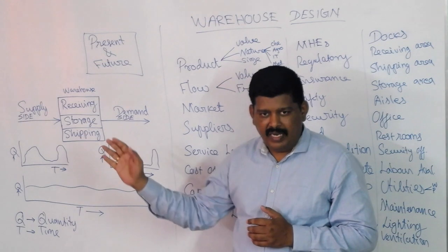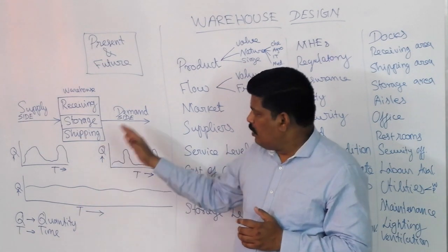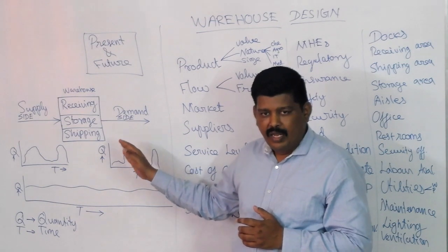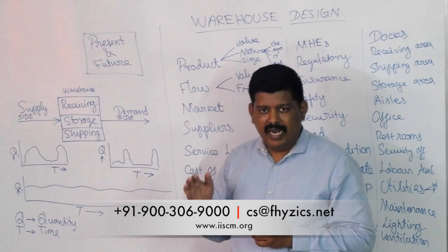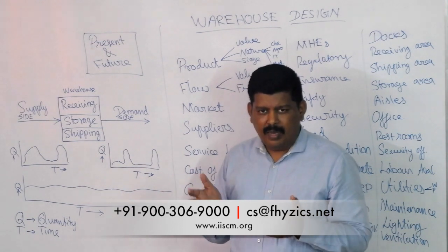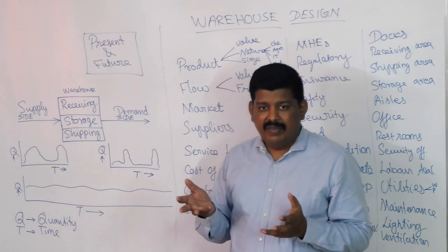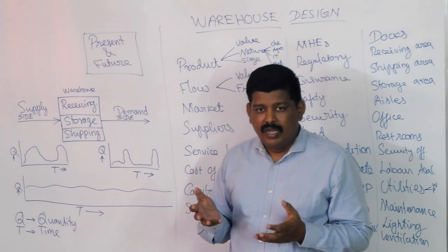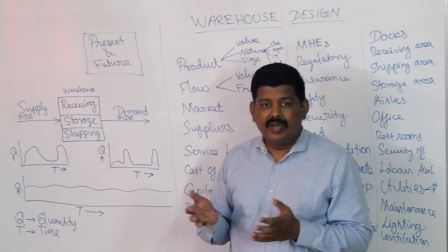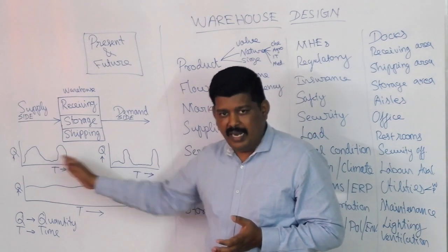A warehouse has two sides: the supply side and the demand side. The supply side is occupied by various suppliers and manufacturers, while the demand side is occupied by customers and consumers. On both sides we have variability — on the supply side due to production disturbances in a manufacturing facility, and on the demand side due to changes in customer demand over time.